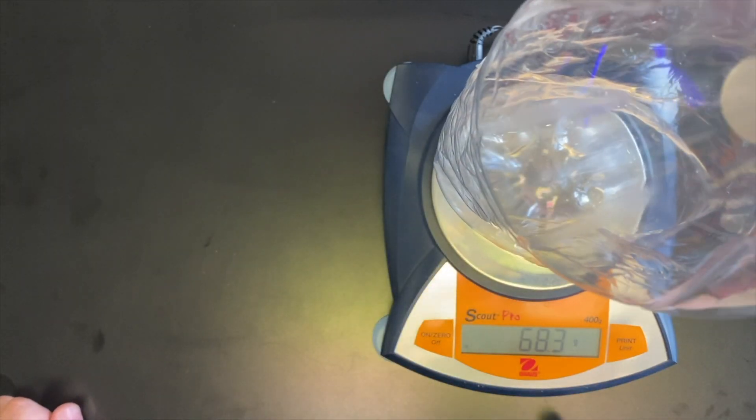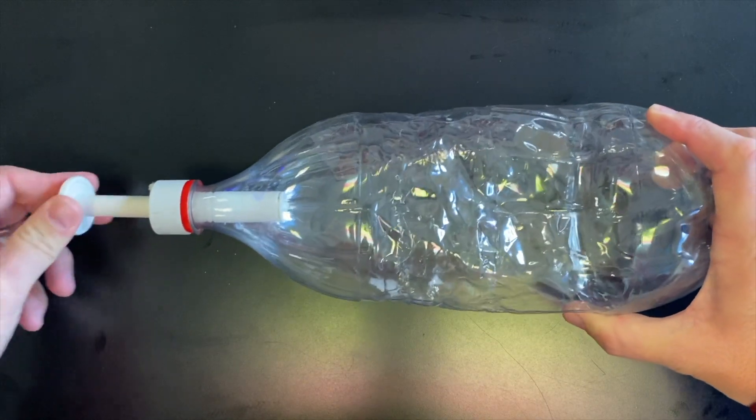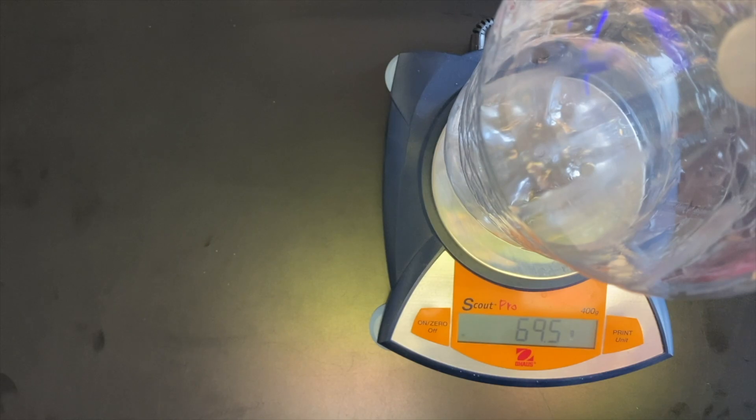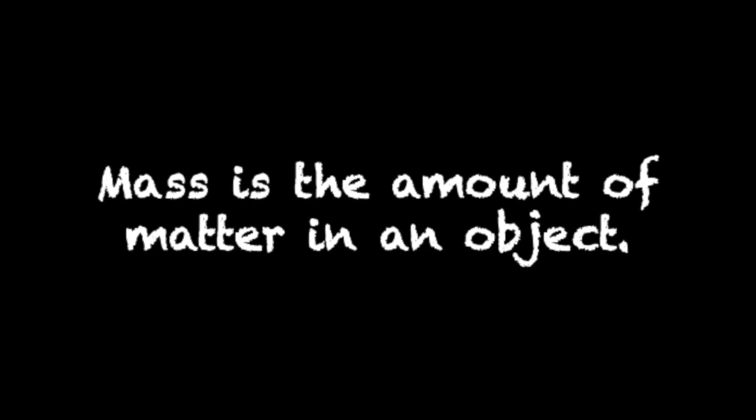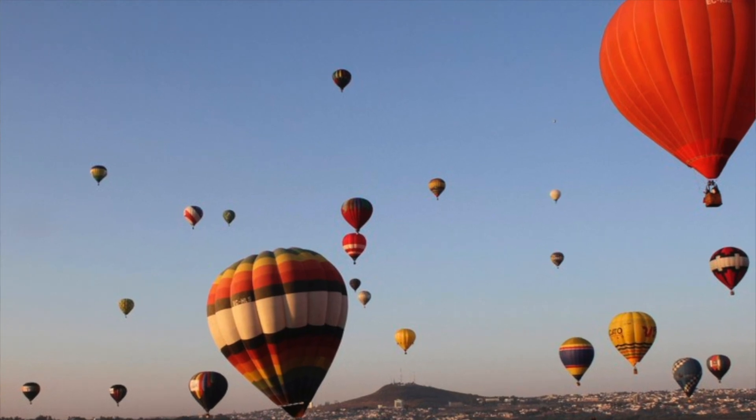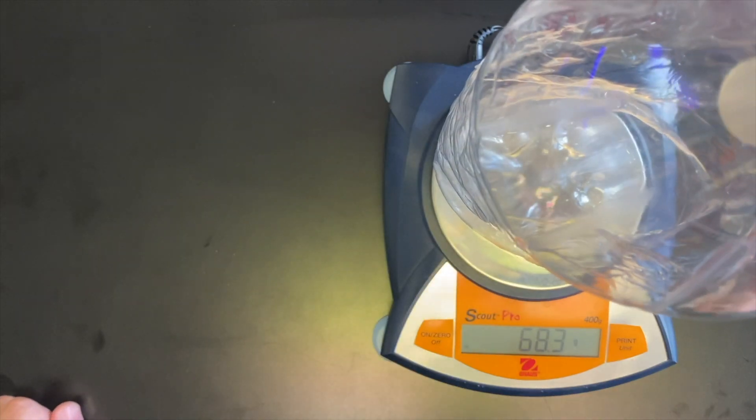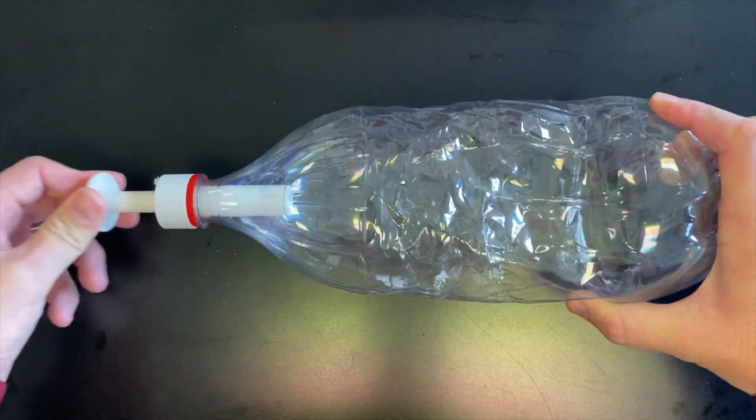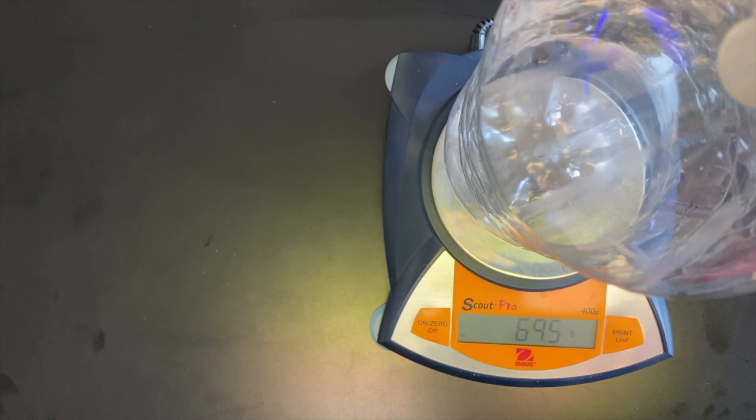In the following lab, the bottle experiment, we learned matter has mass. Mass is the amount of matter in an object. Air is easy to ignore under most circumstances. Air is invisible and difficult to capture and measure, but in lab we are able to successfully weigh a bottle's mass before and after adding air into it.